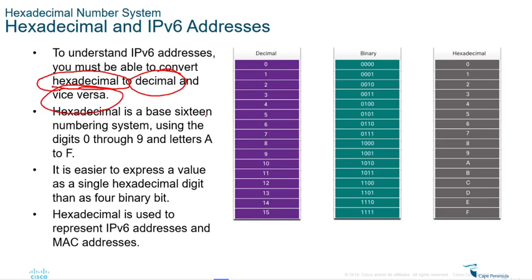Hexadecimal is a base-16 numbering system using digits 0 to 9 and letters A to F. It's easier to express a value as a single hexadecimal digit than as a four-bit binary number. Hexadecimal is used to represent IPv6 addresses and MAC addresses. If you understand converting between hexadecimal, decimal, and binary, you'll understand how IPv6 addresses work and how MAC addresses work.